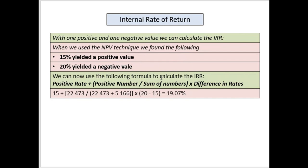So we can now use the following formula to calculate the internal rate of return. We take the positive rate, then we add in brackets: the positive number divided by the sum of the two numbers. When we use this sum of the numbers, we state both of them as positive even though one was negative in our calculation — the formula is just designed that way. We close the bracket and then multiply that with the difference in rates. I've added brackets here so that you can see it. If you replace the values on your line calculator it will give you the right return.